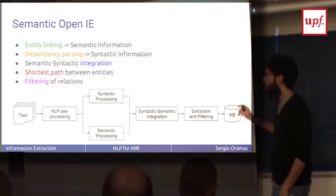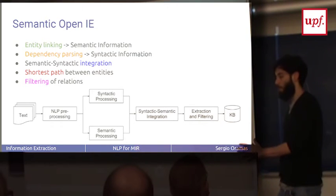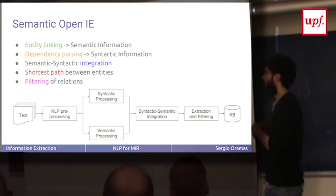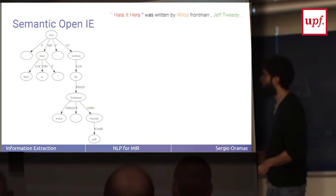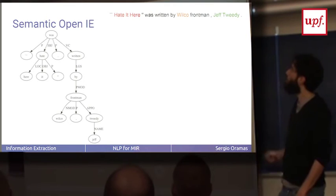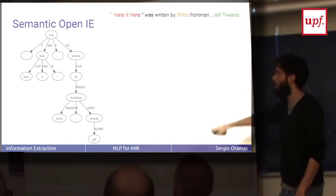This is the approach. You have a set of documents, you apply entity linking, you apply syntactic analysis like dependency parsing analysis, and then we mix these two things, integrate them, then do a process of filtering, and at the end you get the knowledge base. For the sentence from the example before - 'Hated Here was written by Wilco Frontman Jeff Tweedy' - this is the dependency parsing tree of this sentence.